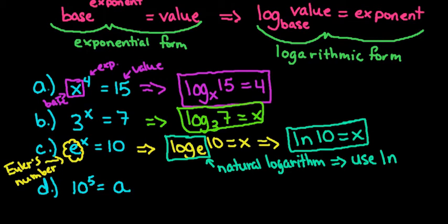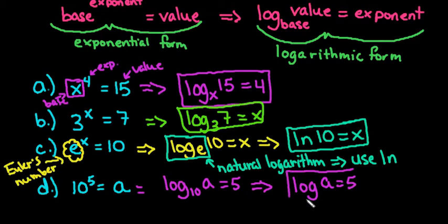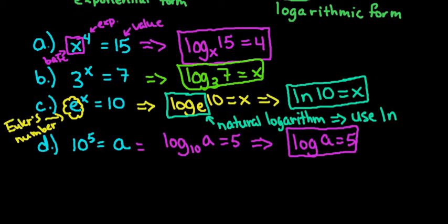And then the last one also is a special type of logarithm. For this one, if we rewrite this as log base 10 of a equals 5, most of the time we would write log a equals 5 without the base. So any time you see a logarithm that does not include a base, this is understood to be base 10.